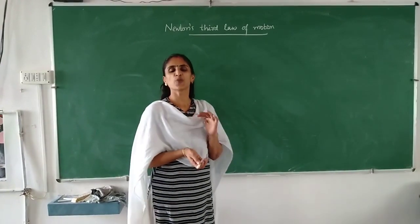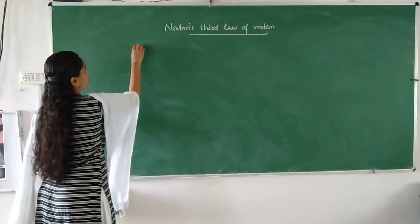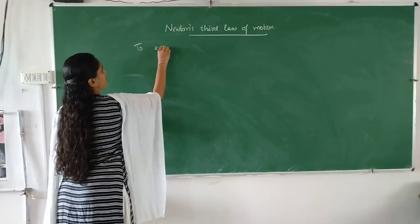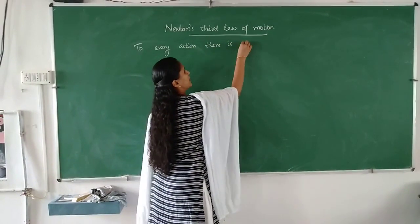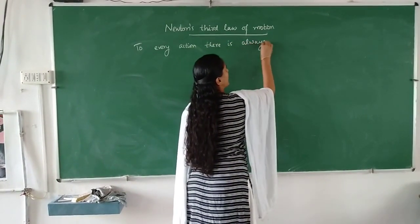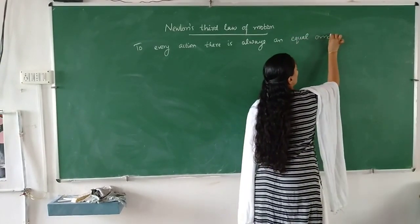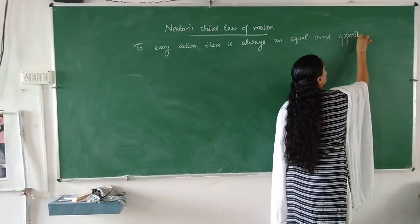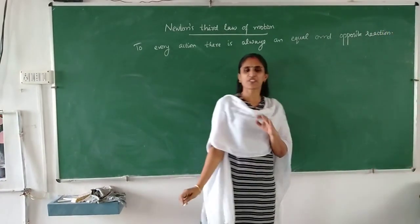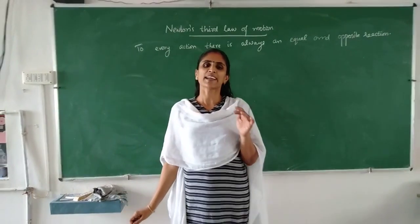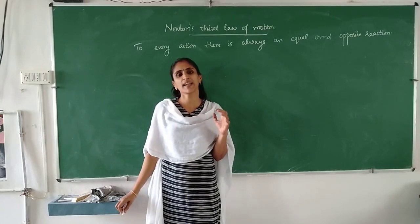So what does Newton's third law say? Newton's third law says that to every action, there is an equal and opposite reaction. Every action that is taking place is followed by a reaction. We can say that action and reaction are always occurring in pairs.